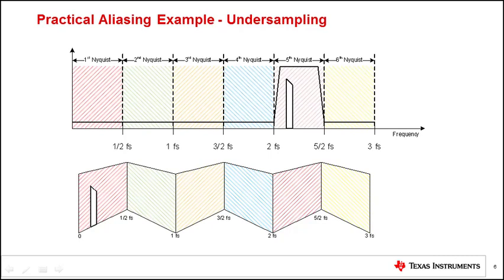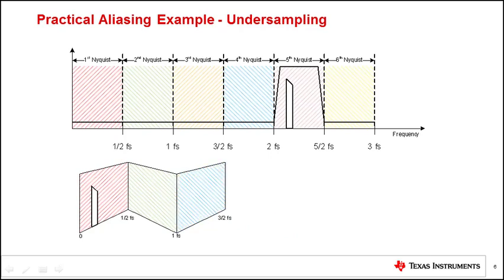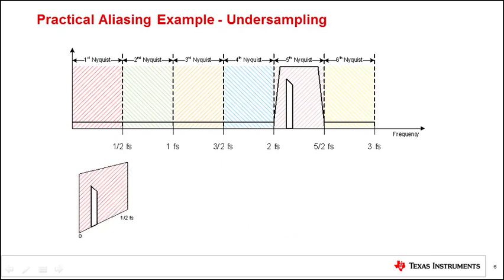To visualize the effect of sampling, we fold the paper and observe all the signals in different Nyquist zones have been superimposed to first Nyquist zone and it is impossible to tell them apart.